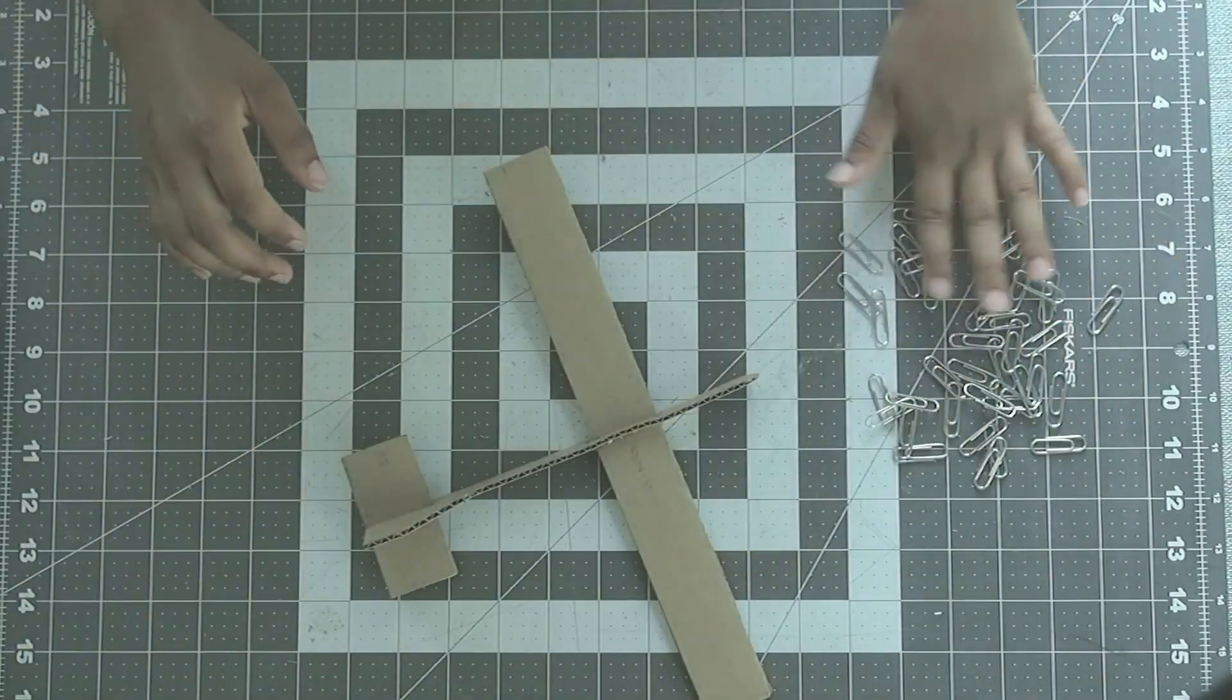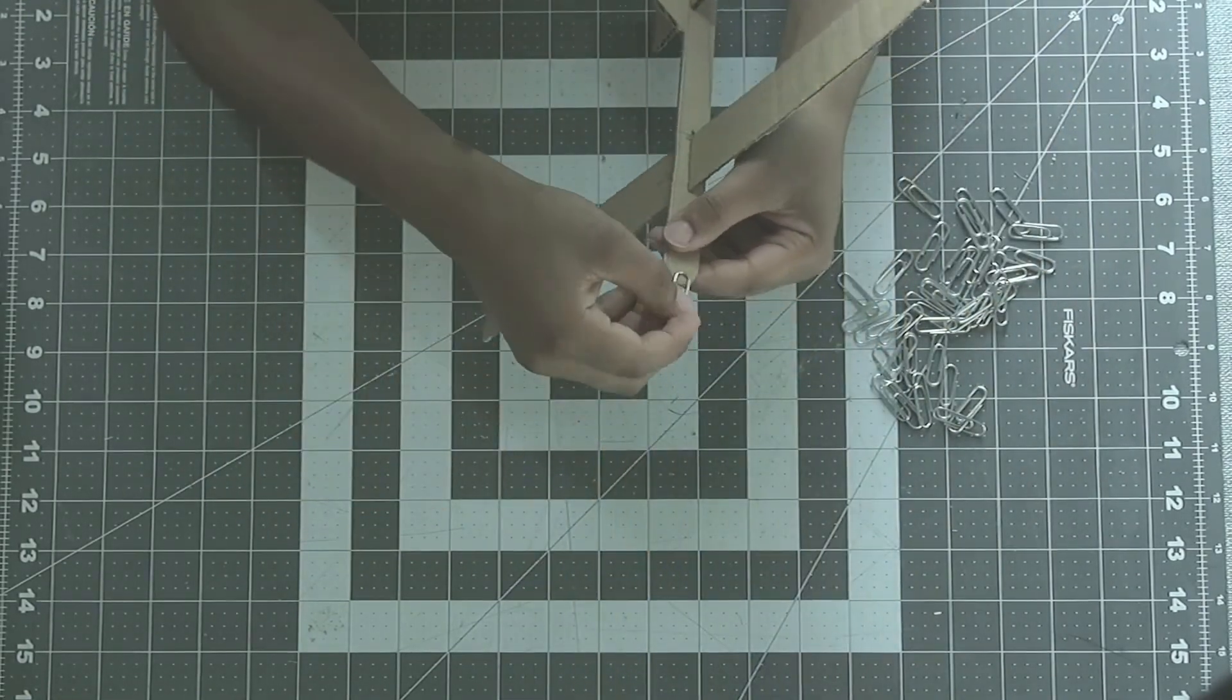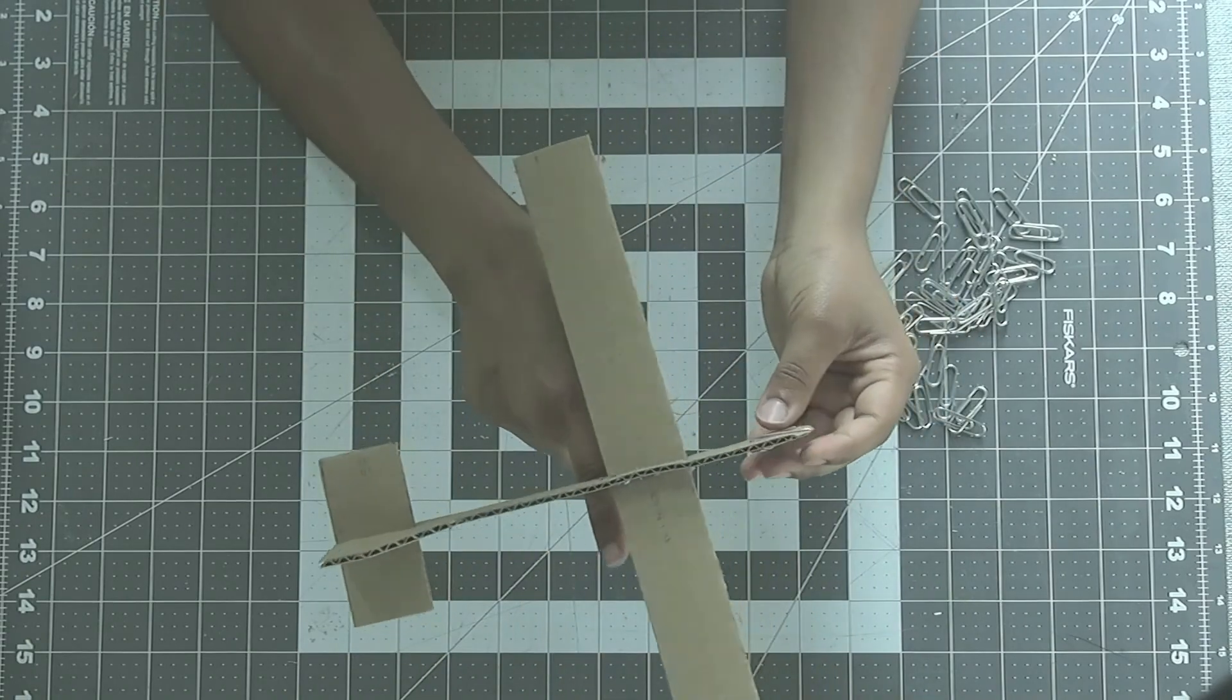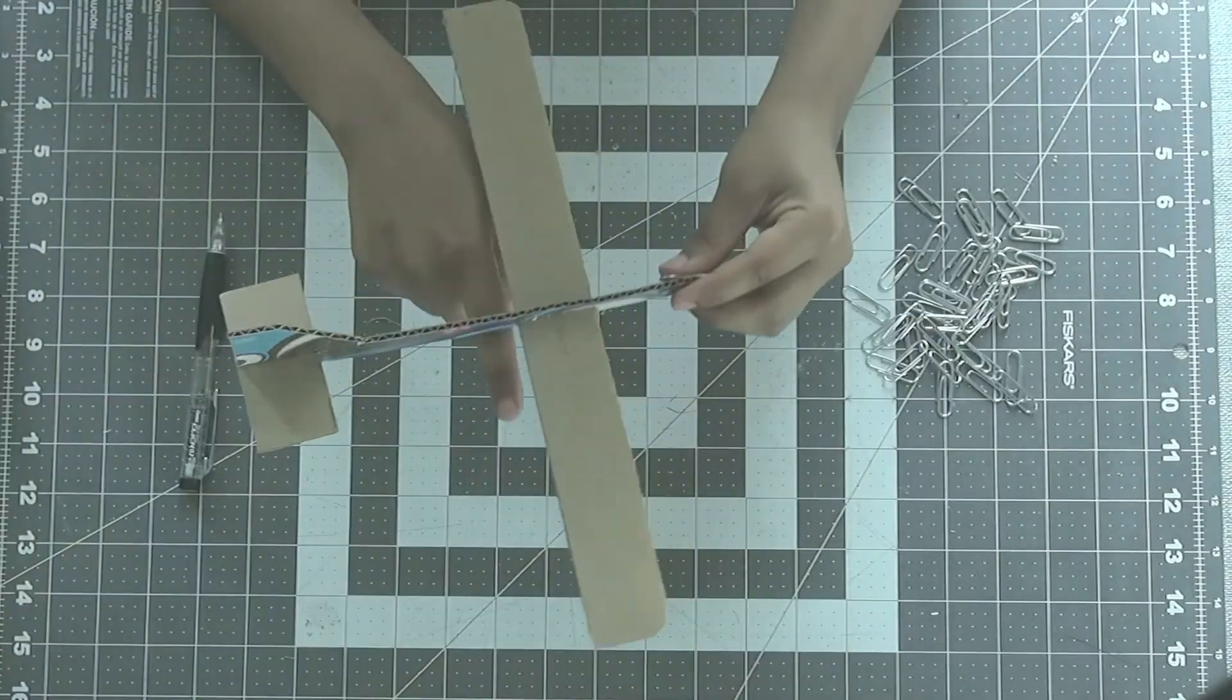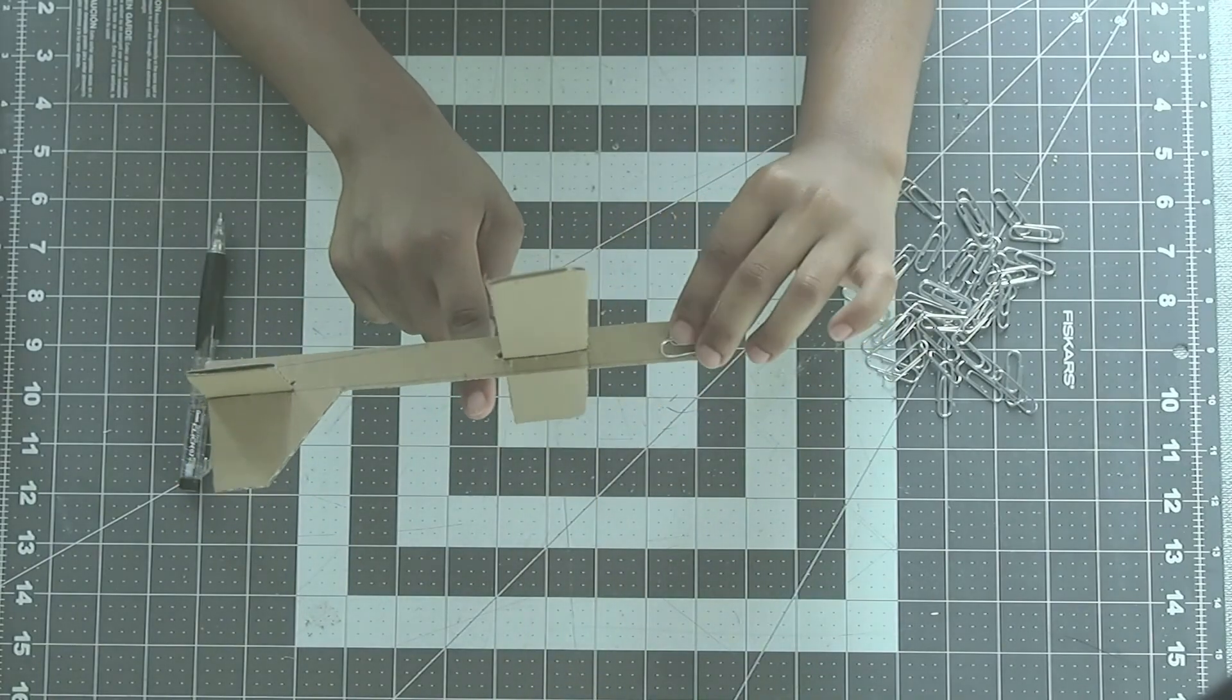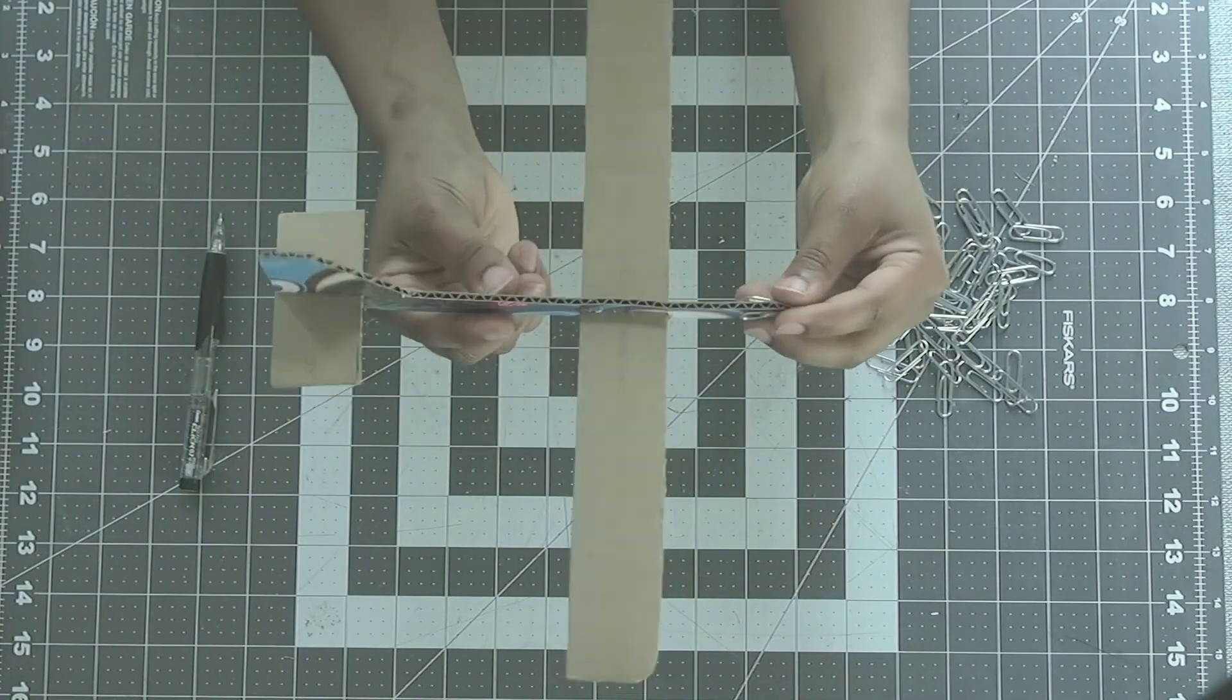After that, use some clay or attach some paper clips to the nose of the aircraft to add some weight to the front. Add enough weight so the CG of the aircraft is roughly 25% from the leading edge of the wing. It's always better to have a nose heavy plane than a tail heavy plane. You can find the CG by trying to balance the aircraft on your finger and seeing where the aircraft balances.